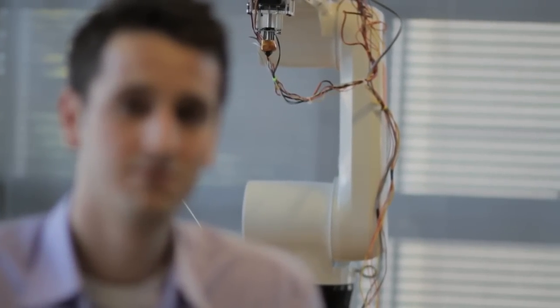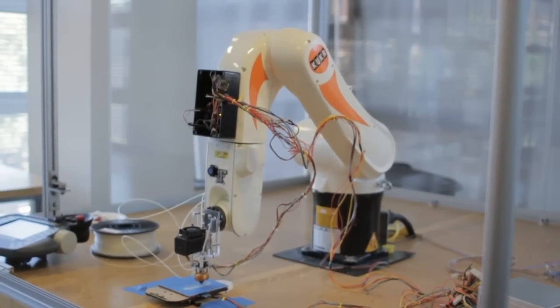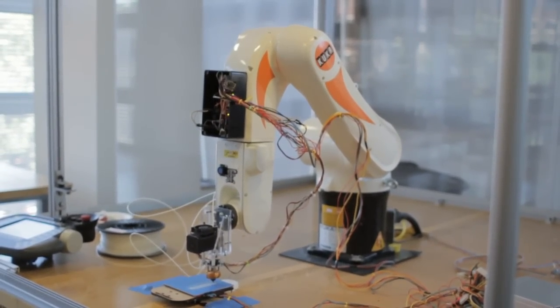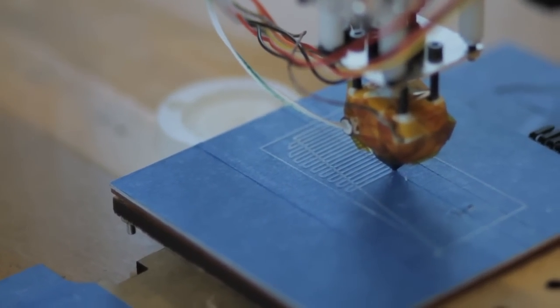Behind me is one of our test platforms for 3D printing. It's a robotic arm and by attaching different extruder heads we can test out different material combinations and designs.